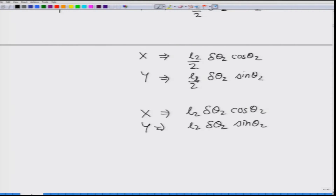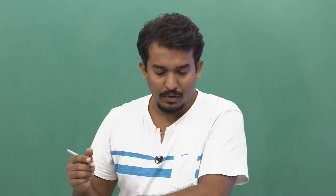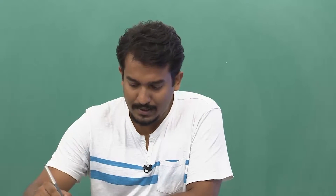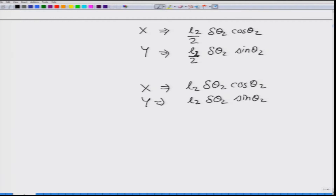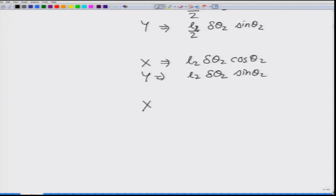The net virtual displacement for the weight of mass m2 and for force F must take into account that delta theta 1 has also happened. Not only will there be displacement relative to the joint, but we must also consider the displacement of the joint itself. The displacement of the joint is l1 delta theta 1 cos theta 1 in x, and l1 delta theta 1 sin theta 1 in y.